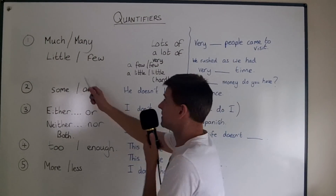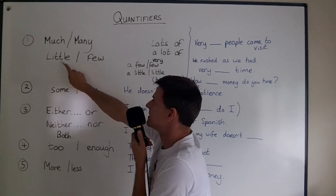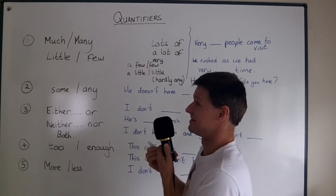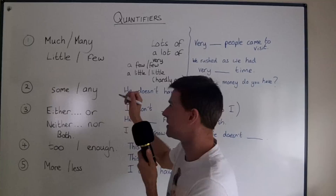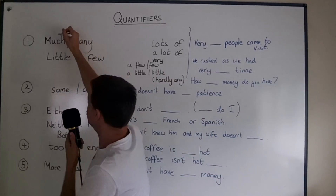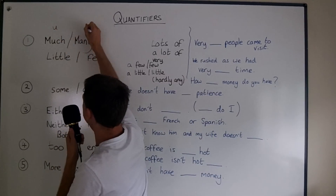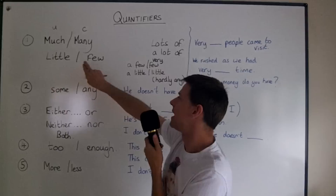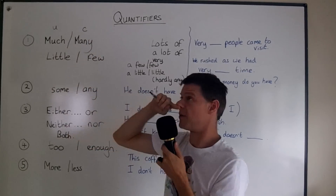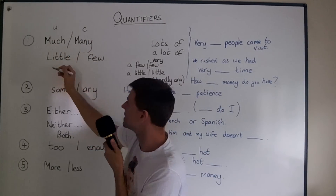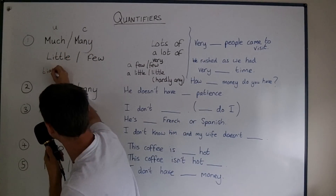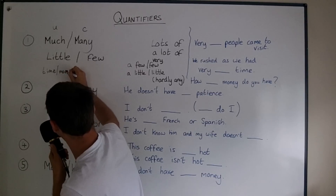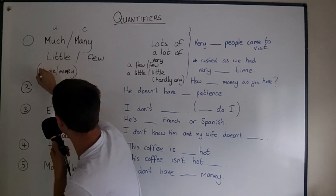Firstly, much and many, little and few. You should all know — definitely remember this for the exam. Much is uncountable and many is countable. Little is uncountable and few is countable. So: how much time, how much money? Remember, time and money are uncountable. How much traffic, how much patience do you have?